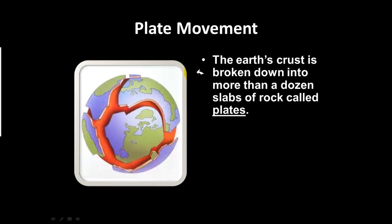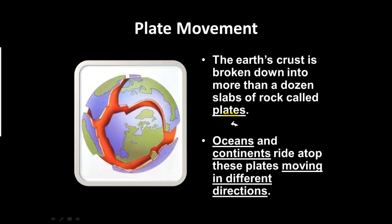Now, plate movement. The Earth's crust is broken down into about a dozen different slabs of rock called plates. The oceans and continents are actually all shifting — they ride atop these plates. These plates are constantly moving in different directions, so we are all slowly moving. Everything sits atop these plates that make up the Earth's crust.